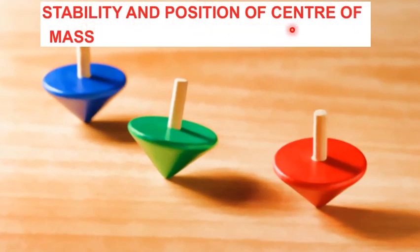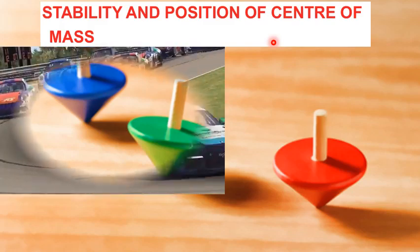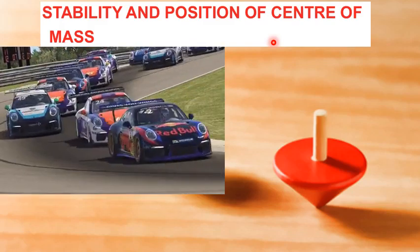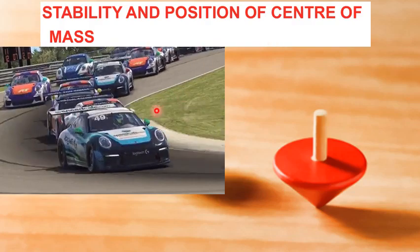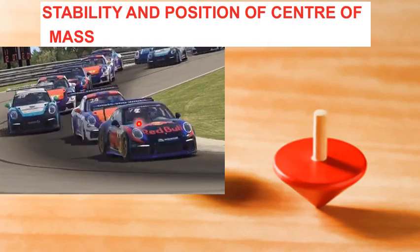Stability and position of center of mass. As we have discussed, the position of the center of mass of an object plays an important role in its stability. To make objects stable, their center of mass must be kept as low as possible. It is due to this reason that racing cars are made heavy at the bottom and their height is kept to a minimum.